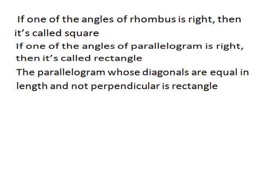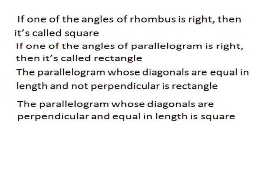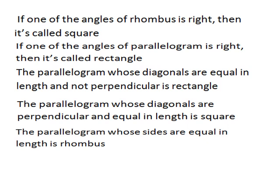The rhombus whose diagonals are equal in length but not perpendicular is called a rectangle. But the parallelogram whose diagonals are both perpendicular and equal in length is called a square. And the parallelogram whose sides are all equal in length is called a rhombus.